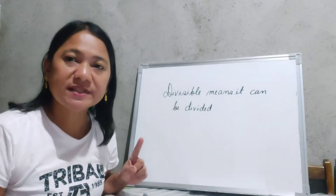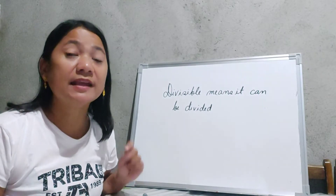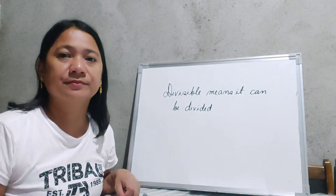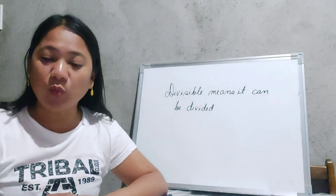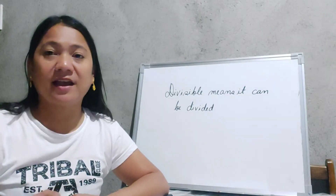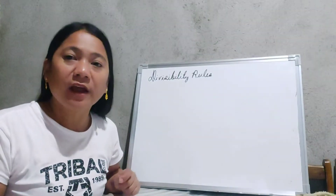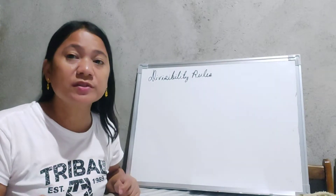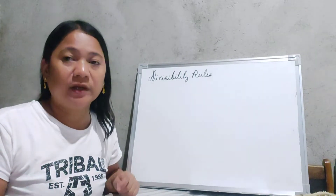When we say divisible, it means that it can be divided. These are numbers that when we divide them, will give us an exact answer. We have different divisibility rules that we should remember.